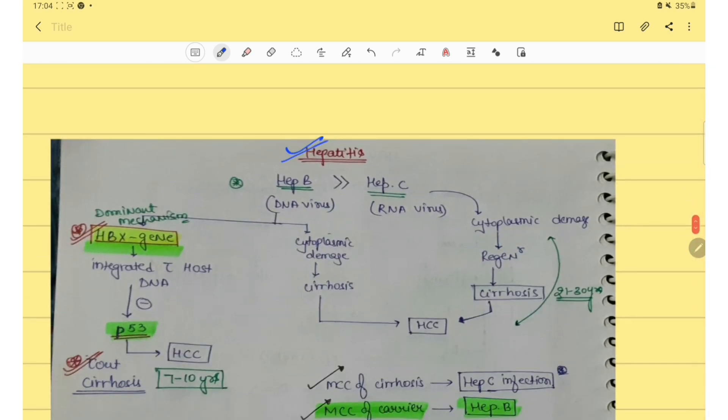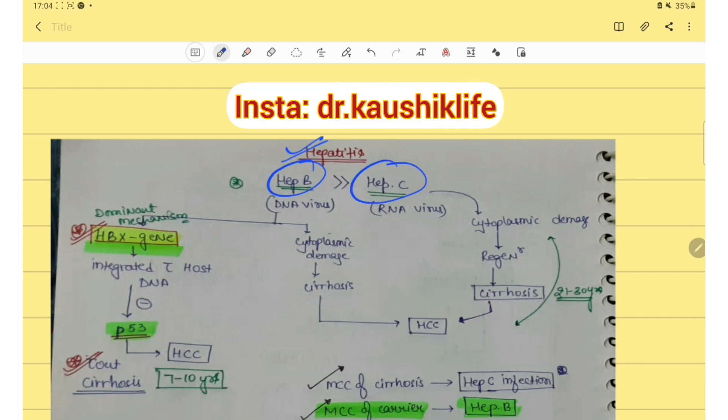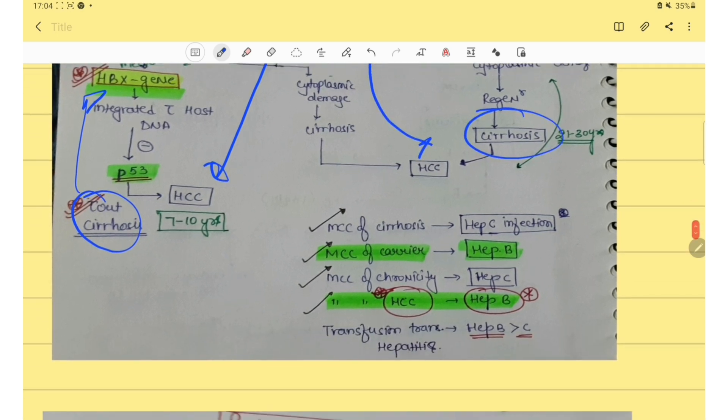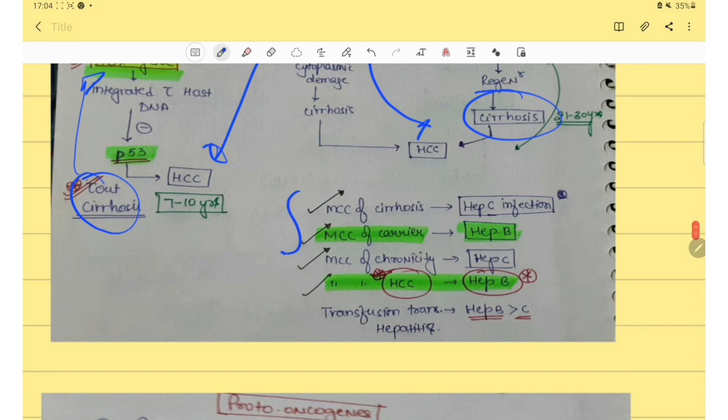Then hepatitis, the most important, hepatitis B and hepatitis C. Hepatitis B causes HCC without cirrhosis via HBX gene and hepatitis C causes HCC with cirrhosis. This table is very important. Most common cause of cirrhosis is hepatitis C and most common cause of carrier is hepatitis B. Most common cause for cholangiocarcinoma is hepatitis C and for HCC it's hepatitis B.